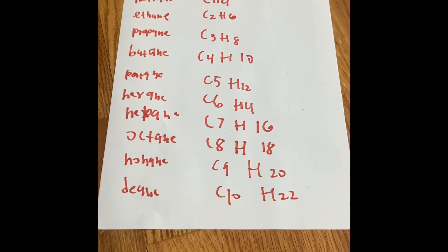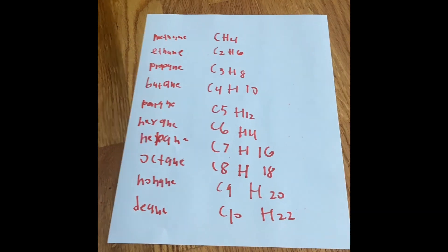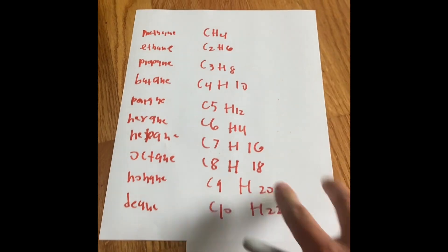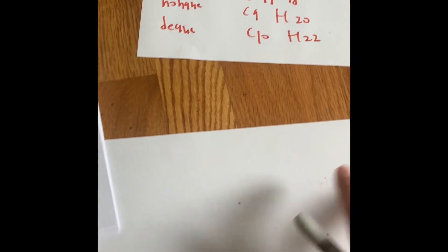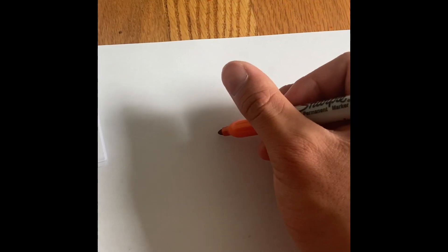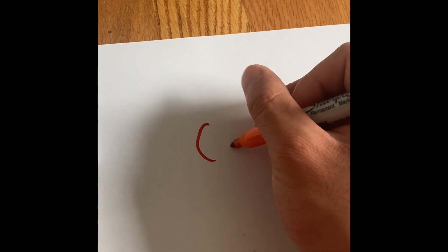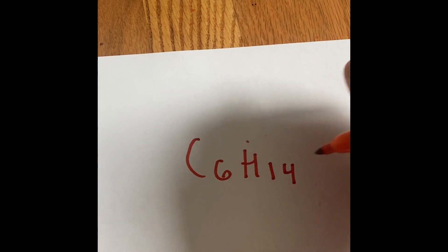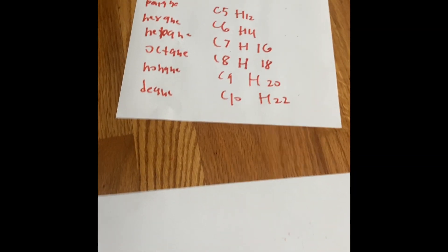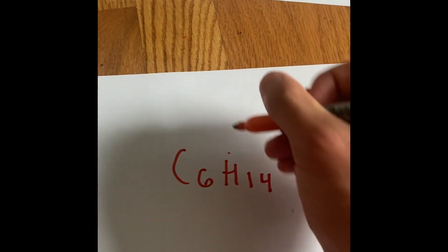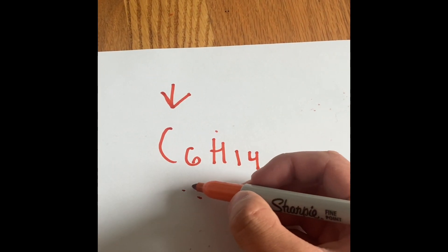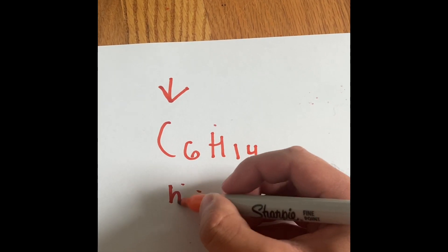But the question is, how do we know what is what? We can do that by practicing it. For example, if we say C6H14, what is that? If you go on here, that's hexane. Hexagon is another way we can memorize it. Get it? Hexane, hexagon. So this is hexane.